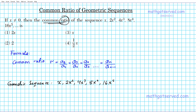We have five terms here. Let's label them: a1, a2, a3, a4, and a5. We can pick any two consecutive terms and divide one by the prior to get the common ratio. So we have options: a2 over a1, a3 over a2, a4 over a3, or a5 over a4.